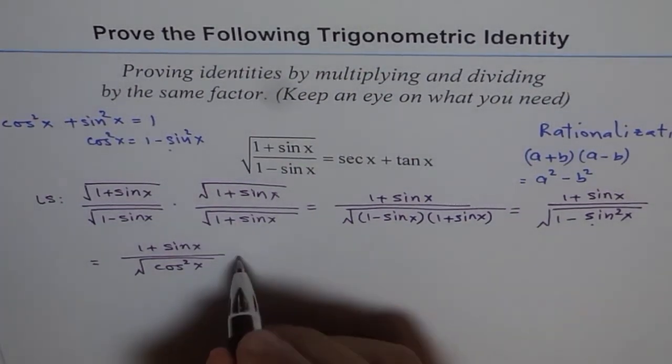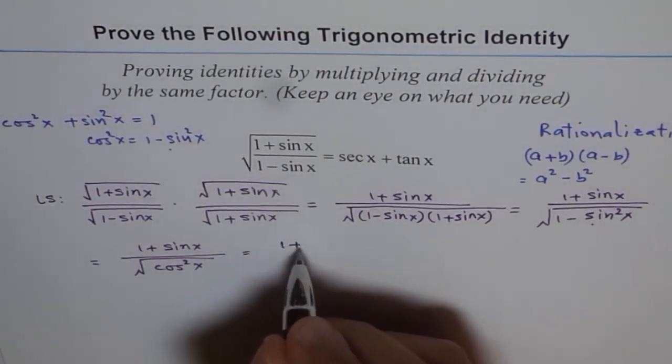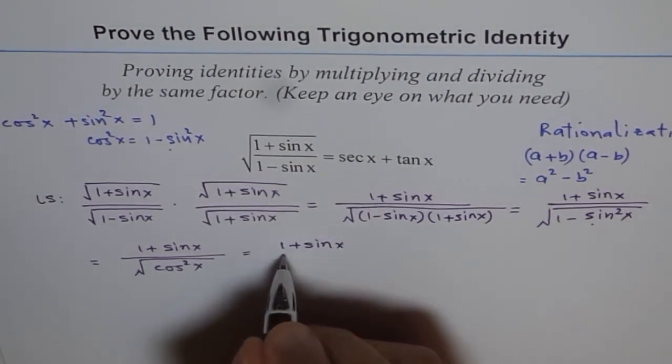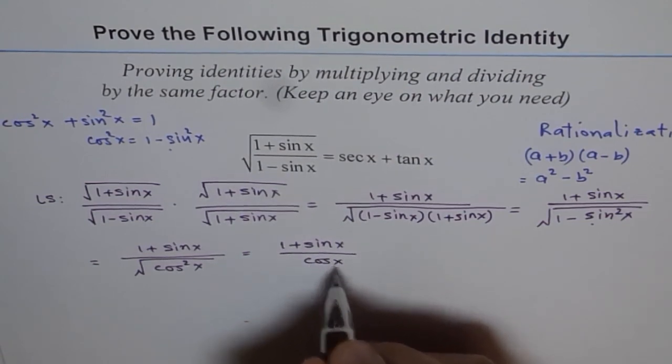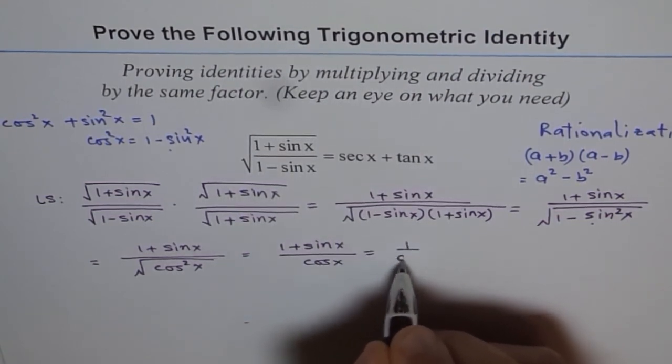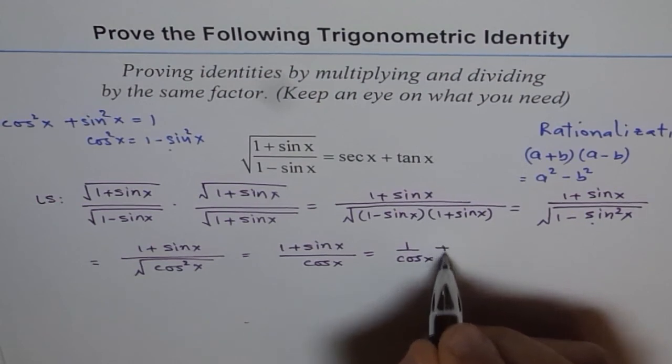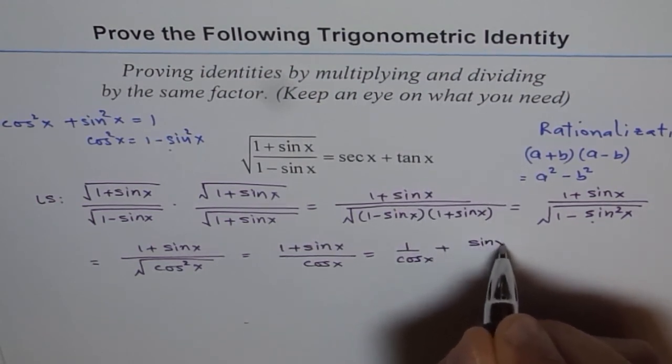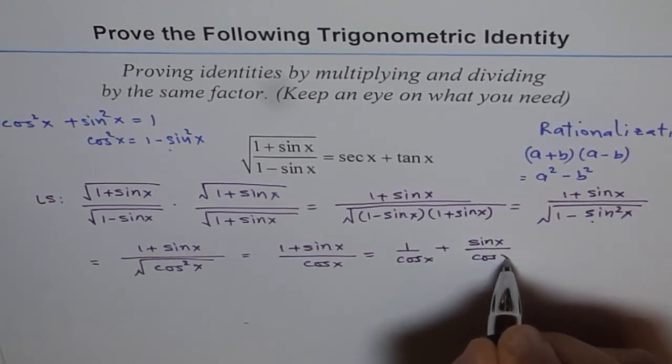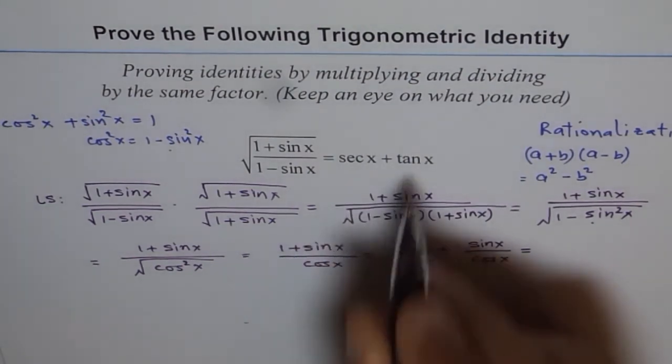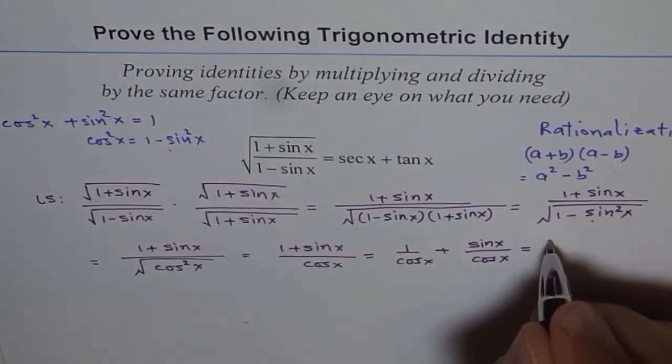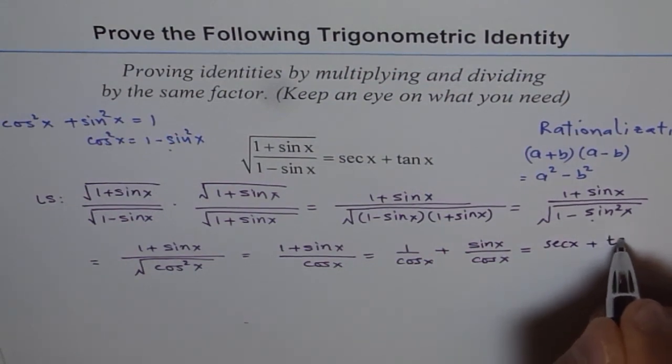Now this could be written as 1 plus sin x divided by cos x, which is 1 over cos x plus sin x over cos x, which is secant x plus tan x.